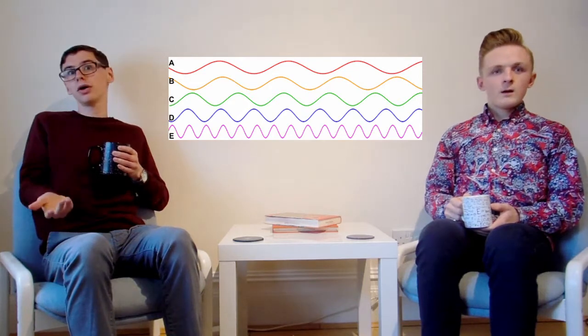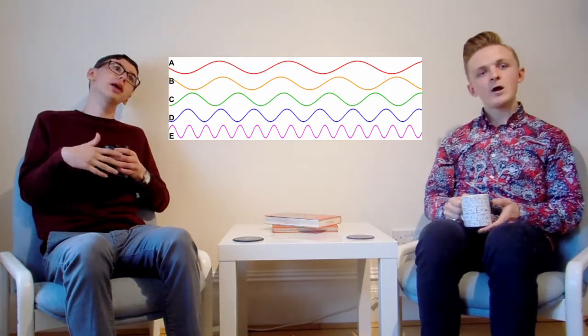Light is a wave — not quite like the waves in the sea, but similar. We can think of them as looking a bit like this. Each colour, be it red, blue, green, turquoise, magenta, burnt umber, crushed aloe, sugar violet...